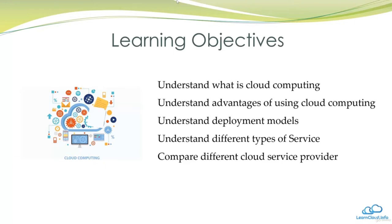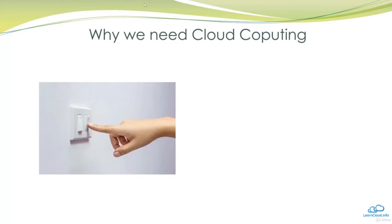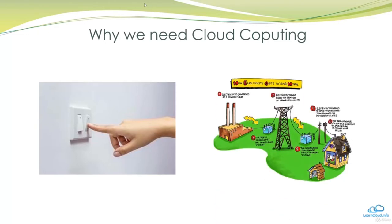When you need light, you simply turn on a switch and expect the light to work. In the back of your consciousness you know your home has an electricity connection, but the details of how electricity gets into the light bulb are not important. You don't think about how electricity is generated in the power plant or how it travels through a network of high voltage transmission lines to your town — all this complex infrastructure is hidden behind a simple act of flipping a switch.